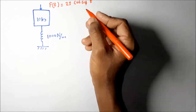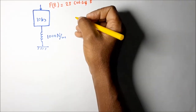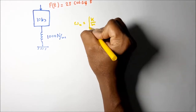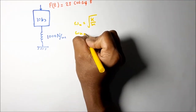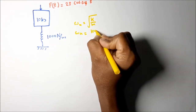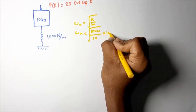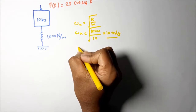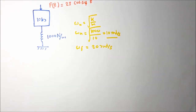We can easily calculate the system natural frequency. The natural frequency ωₙ = √(k/m) = √(1000/10) = 10 radians per second. The forcing frequency ωf is twice the system natural frequency, so ωf = 2 × 10 = 20 radians per second.